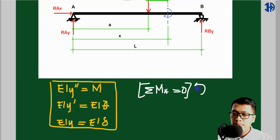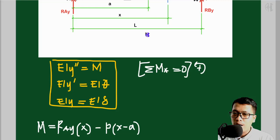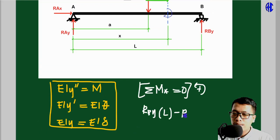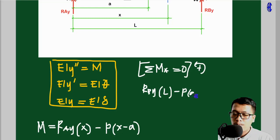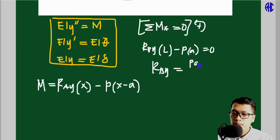Assuming counterclockwise rotation is positive, taking moments at A: RBY times L minus P times a equals zero. Therefore, RBY equals PA over L. For RAY, using the summation of forces along the y-axis equals zero: RAY plus RBY minus P equals zero. Therefore, RAY equals P times (L minus a) over L.